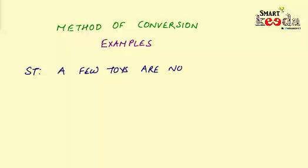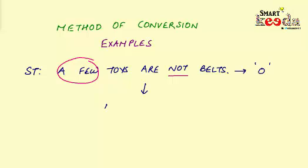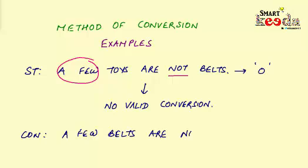Now for the final example: 'A few toys are not belts.' Here we are taking not all but only a few toys into consideration, and that too in a negative context, therefore it will be an O-type statement, which is a particular negative kind of statement. When it comes to converting it, we have already discussed that the conversion of an O-type is not possible and it will give no valid conversion. So if you find a conclusion like 'A few belts are not toys,' you can straight away mark this conclusion wrong because that's not a valid conversion.